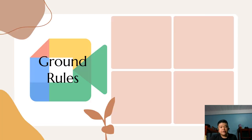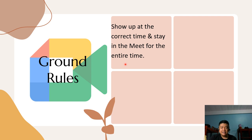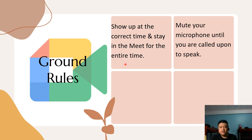When we conduct our Google Meet, there are ground rules that must be followed by everyone. One is to show up at the correct time and stay in the Meet for the entire time. For example, when our class schedule is from 8 to 9 am, students are expected to be at the Meet at least five minutes before the start of class and must stay until the class is dismissed.